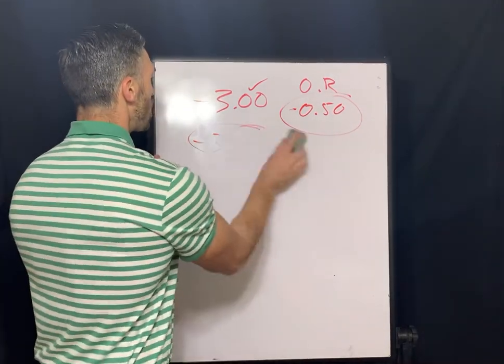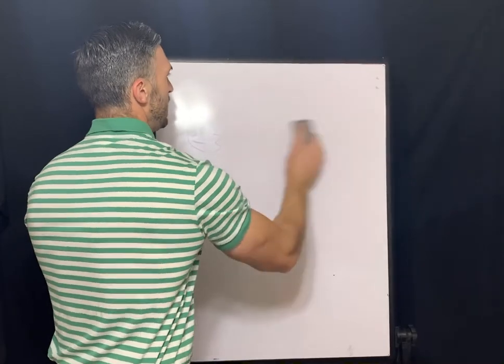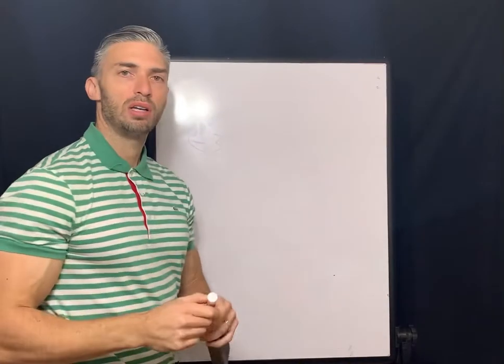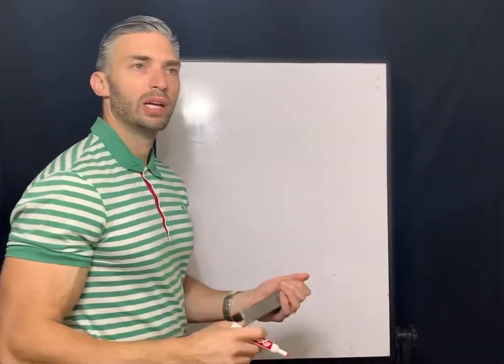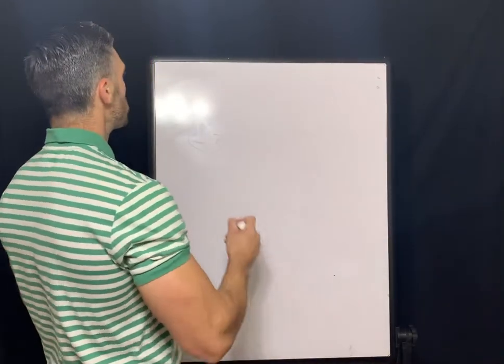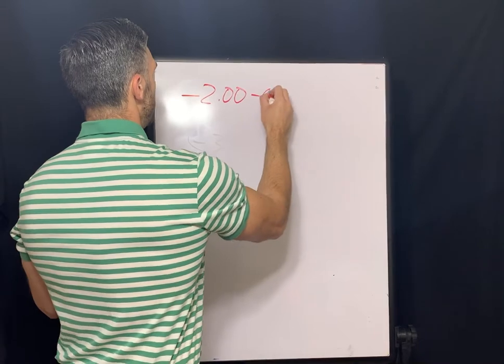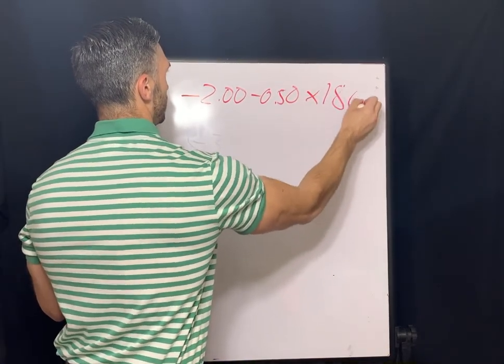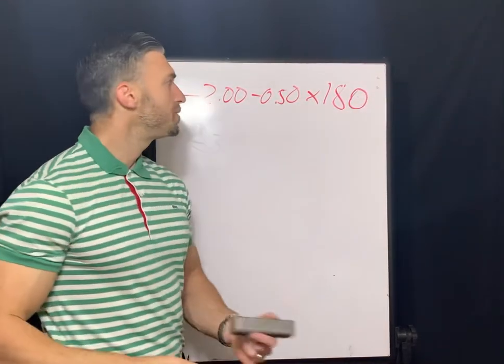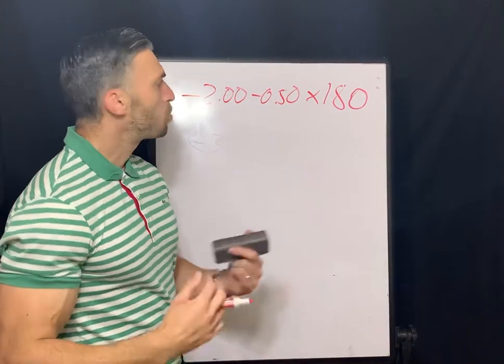So where it gets a little more complicated is when we deal with the optical cross to really understand what we're looking at. So let's look at this prescription for example. Negative two, negative a half, axis 180.